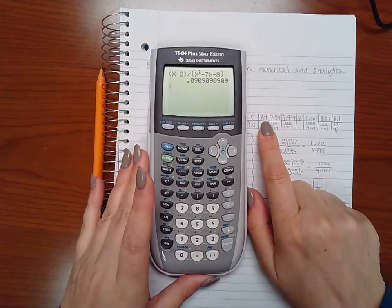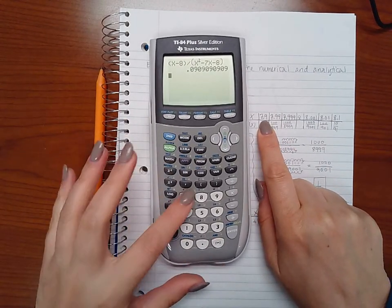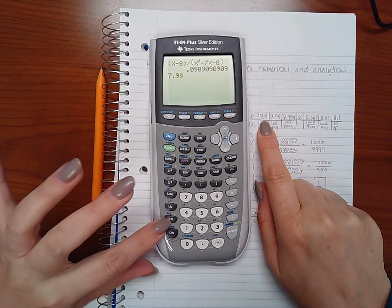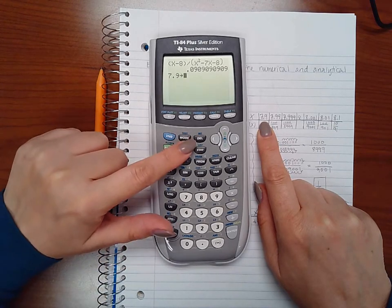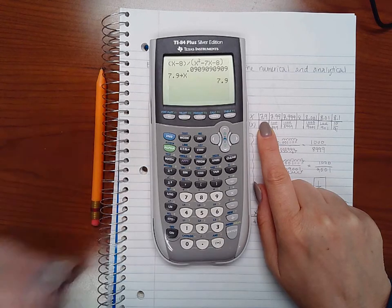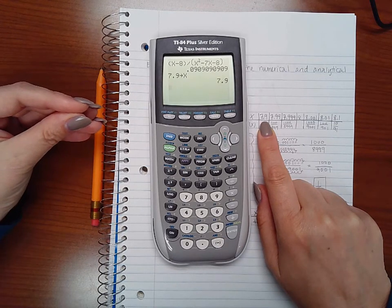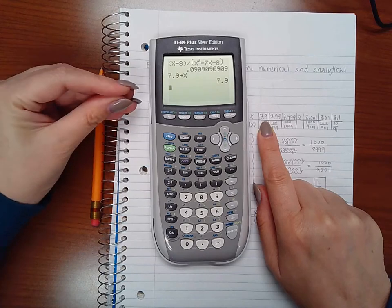So I am going to start by using this number 7.9. So I'm going to type 7.9 and then I'm going to hit this button here above the on that says store and then hit my variable x. When I hit enter it now programs the calculator that x is now 7.9.